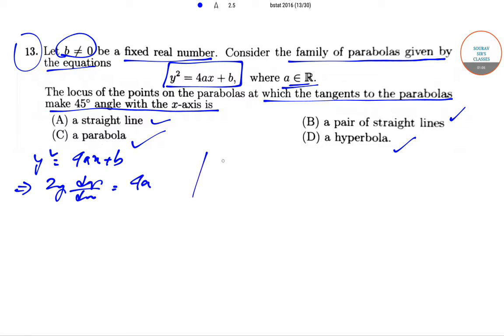Now we know here dy/dx at the tangency point is equal to tan(45°) or tan(-45°). This will give us that dy/dx is equal to 1 or -1, or we can write as ±1.